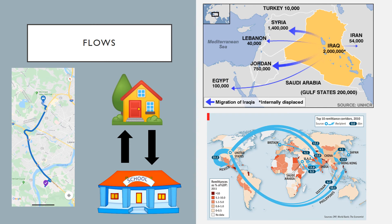Another way we think spatially is through flows. The biggest way we've seen this in class is migration routes. We can take it to a local level — trips from your house to school — or on a larger scale, like migration routes from Iraq into Syria and Jordan, where bigger arrows indicate more people. I also use the map of remittances, where migrants send earned money back to their home countries. We can see that as a flow map too.